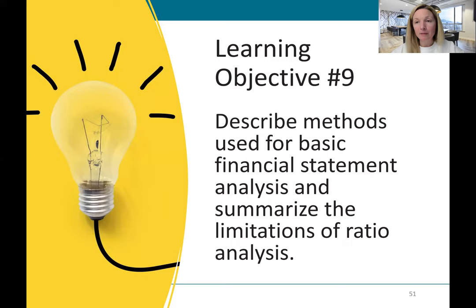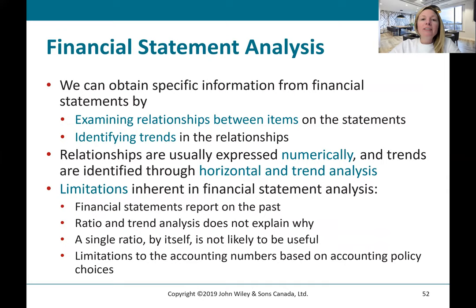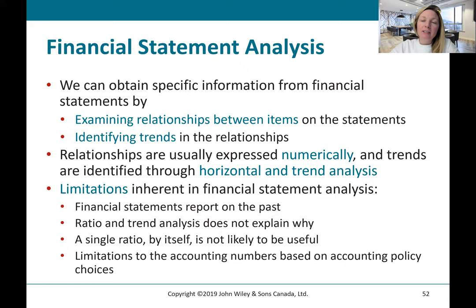Learning objective number nine: describe methods used for basic financial statement analysis and summarize the limitations of ratio analysis. We've been discussing ratio analysis at the end of many chapters, and we'll summarize it here. Financial statement analysis allows us to obtain specific information from financial statements by examining relationships between items and looking at trends. However, there are limitations: financial statements only report on the past and are not predictive; ratio and trend analysis doesn't explain why a ratio is moving in a certain direction; a single ratio alone is not likely to be useful — it's really a group of ratios moving together; and if a company is changing its accounting policies, that can muddy the waters.